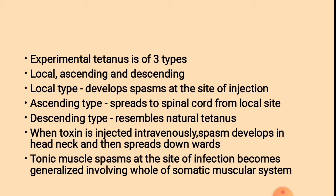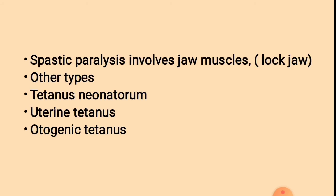In the local type, spasm develops at the site of injection. In the ascending type, it spreads to the spinal cord from the local site. In the descending type, which resembles natural tetanus, when toxin is injected intravenously, spasm develops in the head and neck and then spreads downward. Tonic muscle spasm becomes generalized, involving the whole somatic muscular system. Spastic paralysis involves the jaw muscles, known as lockjaw. Other types include tetanus neonatorum, uterine tetanus, and autogenic tetanus.